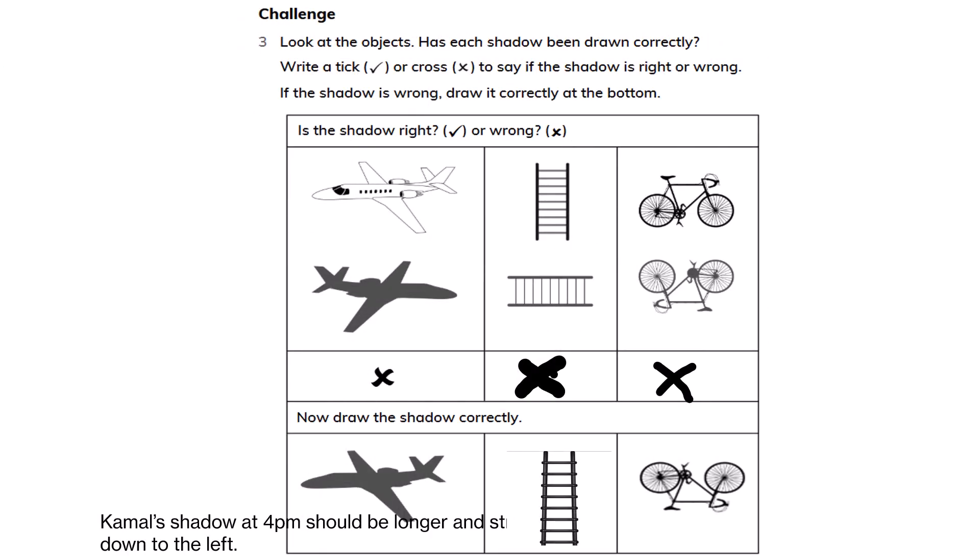Look at the objects below. Has each shadow been drawn correctly? Write a tick or a cross to say if the shadow is correct or wrong. If the shadow is wrong, draw it correctly at the bottom.